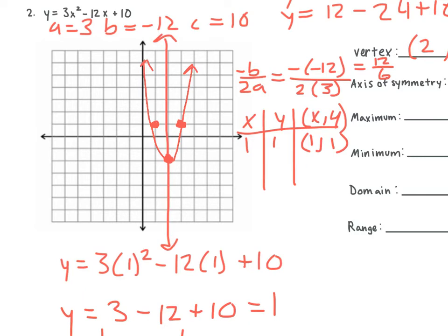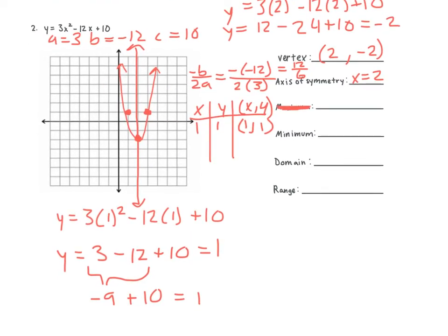Do we have a max value here or a min? Min. So let's cross out maximum. On the homework, a lot of people put numbers for the max and min — if you do that on the quiz tomorrow, it'll be wrong. You either have a max or a min; you can only put a value for one of them. This one has a minimum of negative 2. What's our domain? All real numbers. And what's our range? Negative 2 to infinity, since our graph is pointing up.